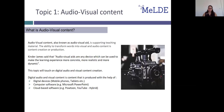What is audio-visual content in the context of teaching exactly? Also known as audio-visual aid, audio-visual content is supporting teaching material. The transformation of words into visual and audio content is called content creation or production. James S. Kimber said that audio-visual aids are any device which can be used to make the learning experience more concrete, more realistic, and more dynamic.